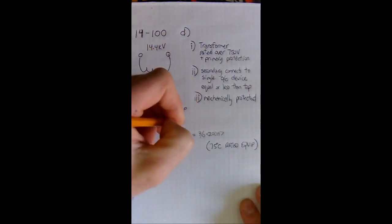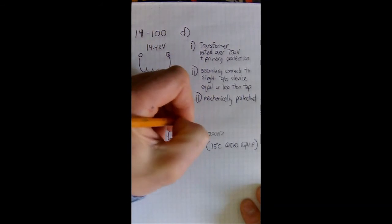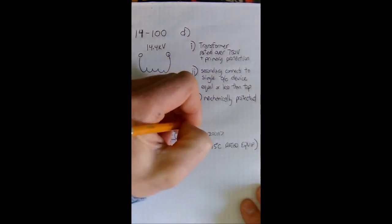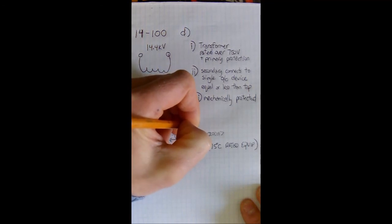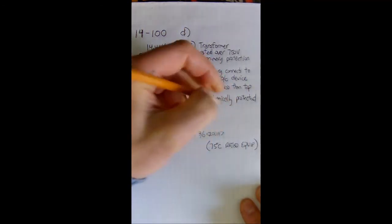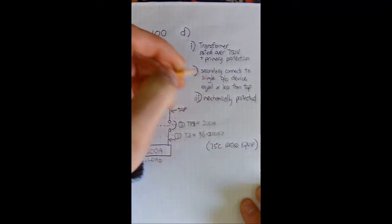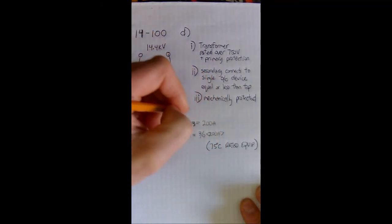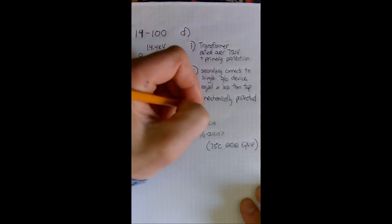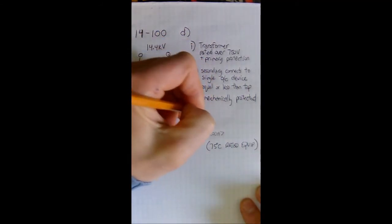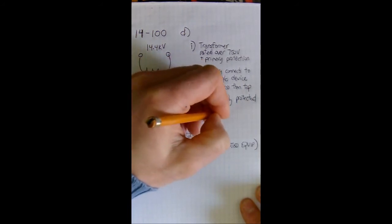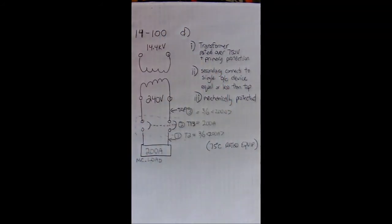Now step two, we size our overcurrent device. So table 13 says, and that's supposed to say table 13, that says we're going to use a 200 amp breaker. And then we size the tap, and the tap has to be equal or greater. Well that'll be easy, this will also be 3-aught which is good for 200 amps. So there you go, that's rule 14-100D.